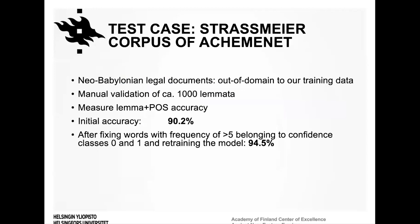To test the lemmatizer in practice, we applied it to a subcorpus of Akhemenet — a Neo-Babylonian corpus of legal documents from the late first millennium BCE. This dataset contained about 100,000 words, mostly out-of-domain relative to our training data. Initial accuracy measured on 1,000 randomly selected tokens was about 90%. We then tested minimal manual corrections by extracting the list of lemmas with the two lowest confidence scores and manually fixing those occurring five or more times in the corpus, then pushing corrections back into the training data.